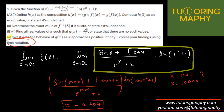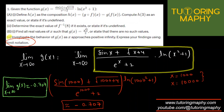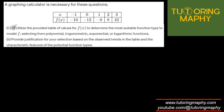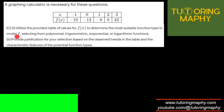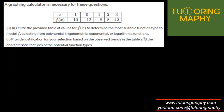So the final answer using limit notation is: the limit as x approaches infinity of g(x) is approximately negative 0.707. Let's move on to the last parts, C1 and C2. They're asking us to utilize the provided table of f(x) to determine the most suitable function type — selecting from polynomial, trig, exponential, or logarithmic.